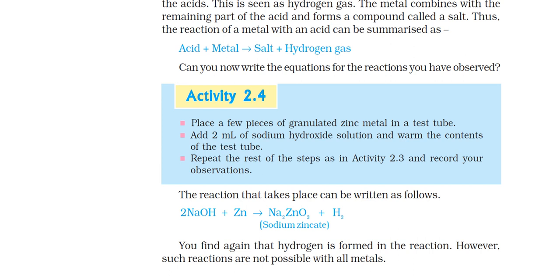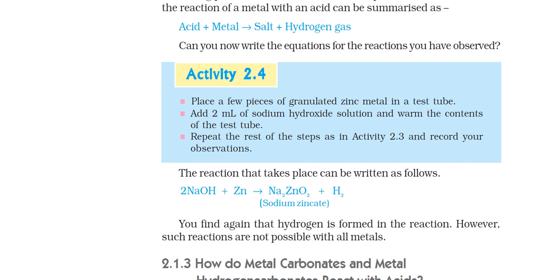Repeat the rest of the steps in Activity 2.3 and record our observations. We can write the reaction from this: 2 NaOH plus Zn will get Na₂ZnO₂ plus H₂. Na₂ZnO₂ means sodium zincate. H₂ is the hydrogen gas which is evolved. You can find out that hydrogen is formed in this reaction, and these reactions are not possible with all metals.